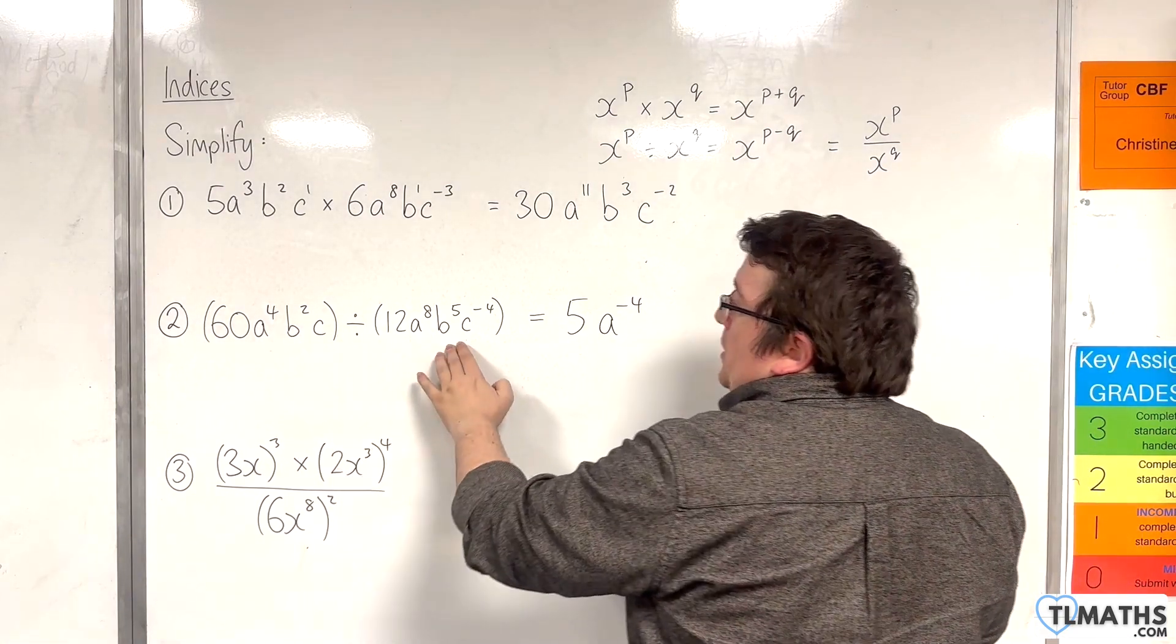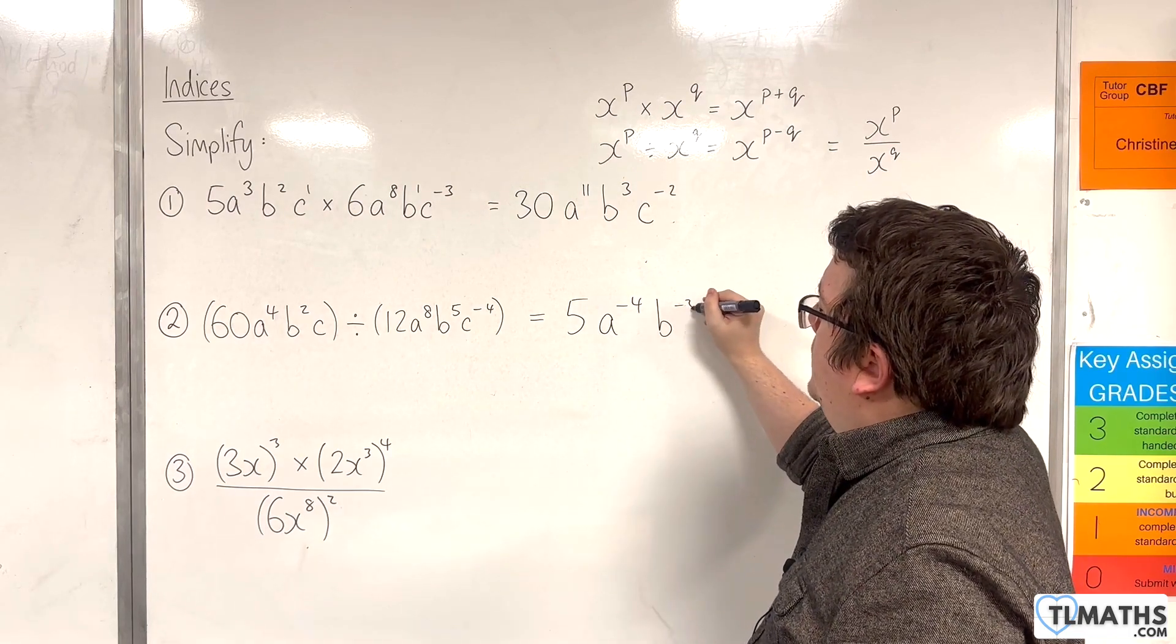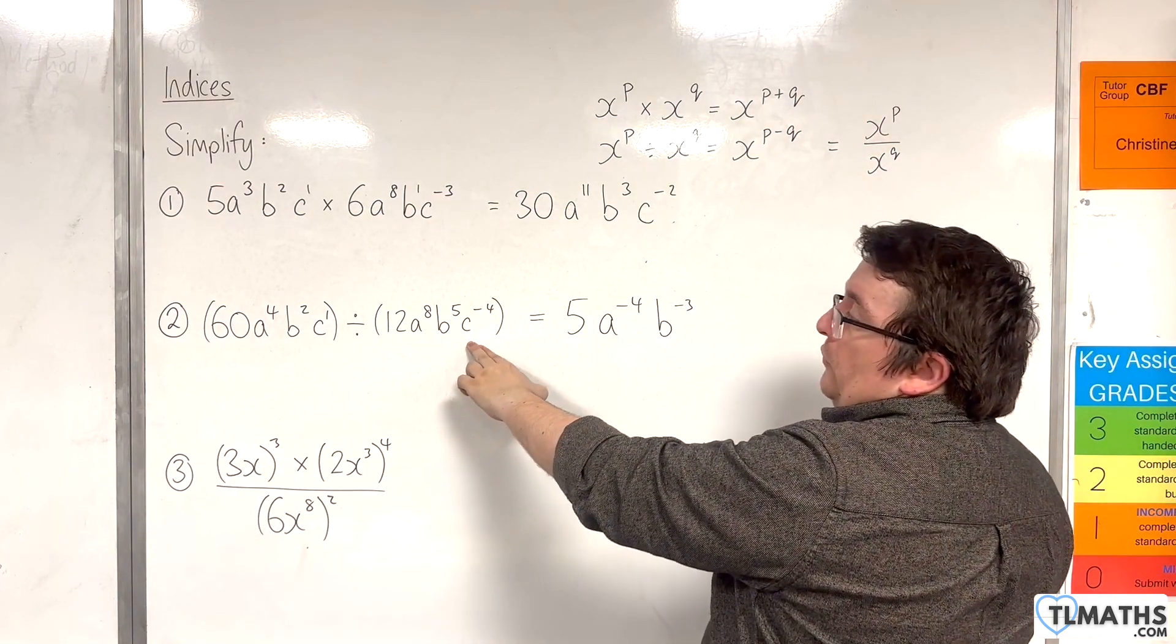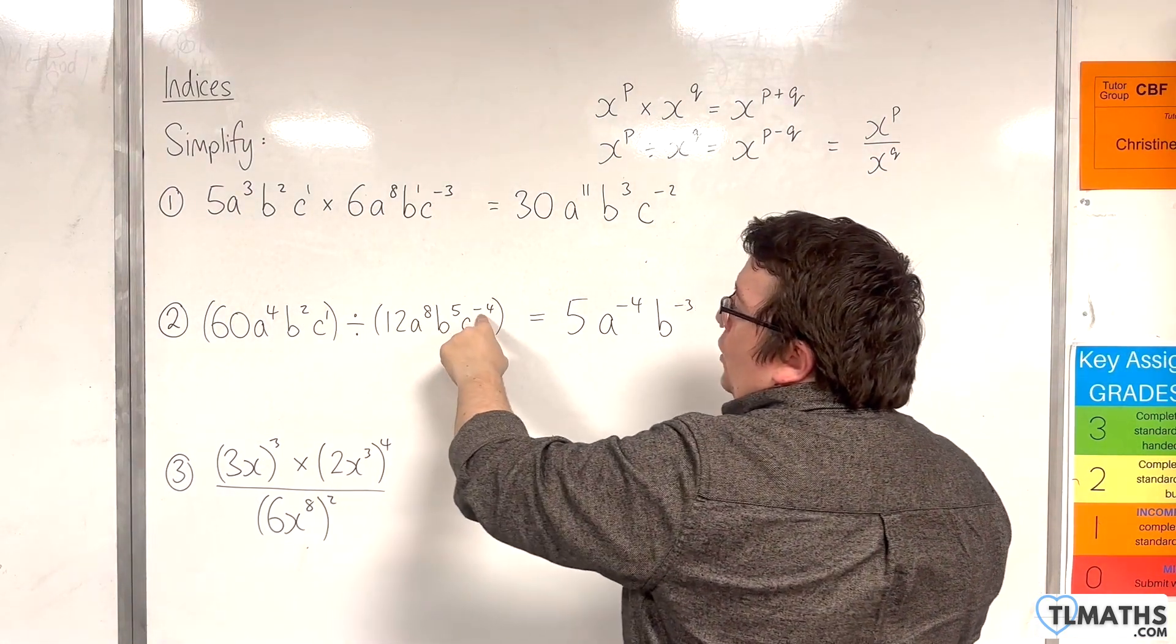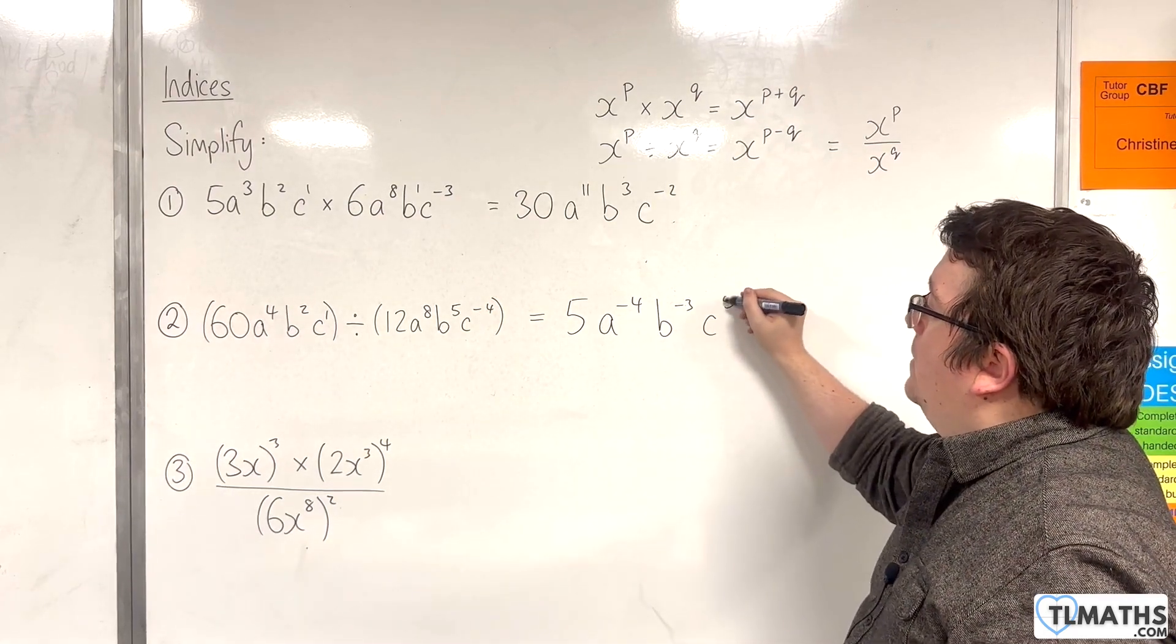Then we have b squared divided by b to the 5. So 2 take away 5 is minus 3. So b to the minus 3. And then c to the 1 divided by c to the minus 4. 1 take away minus 4 is 1 plus 4, which is 5. So c to the 5.